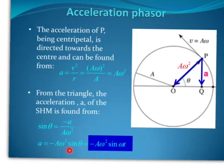And the minus sign simply means, while the velocity phasor is pointing upwards, acceleration is pointing downwards.